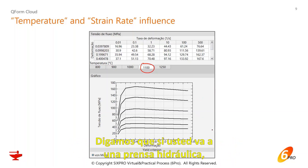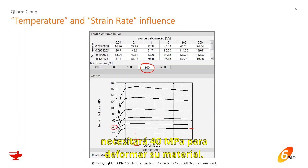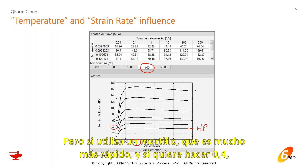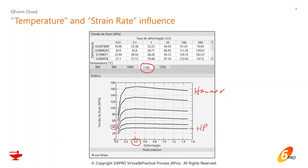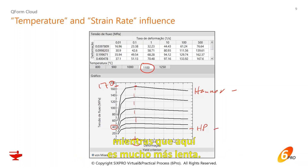If you use a hydraulic press and want to do 0.4 strain deformation in a part, you're going to need around 4 megapascals to deform your material. But if you use a hammer, which is much faster, and you want to do 0.4 strain, the stresses needed are much higher — now it's around 170 megapascals. That's because the deformation is much faster.